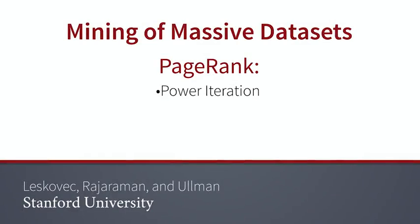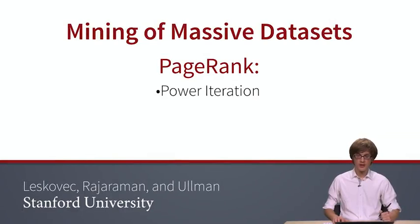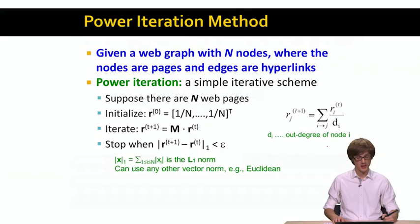The question is how do we compute the eigenvector, or the solution to this problem r equals M times r? The way we proceed is the following. The method is called the power iteration method.